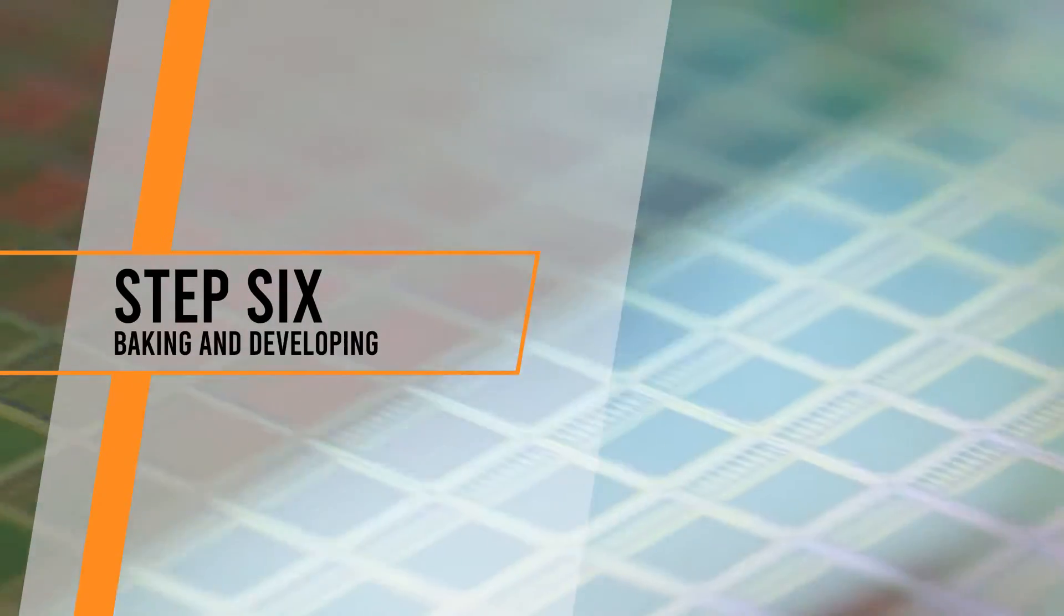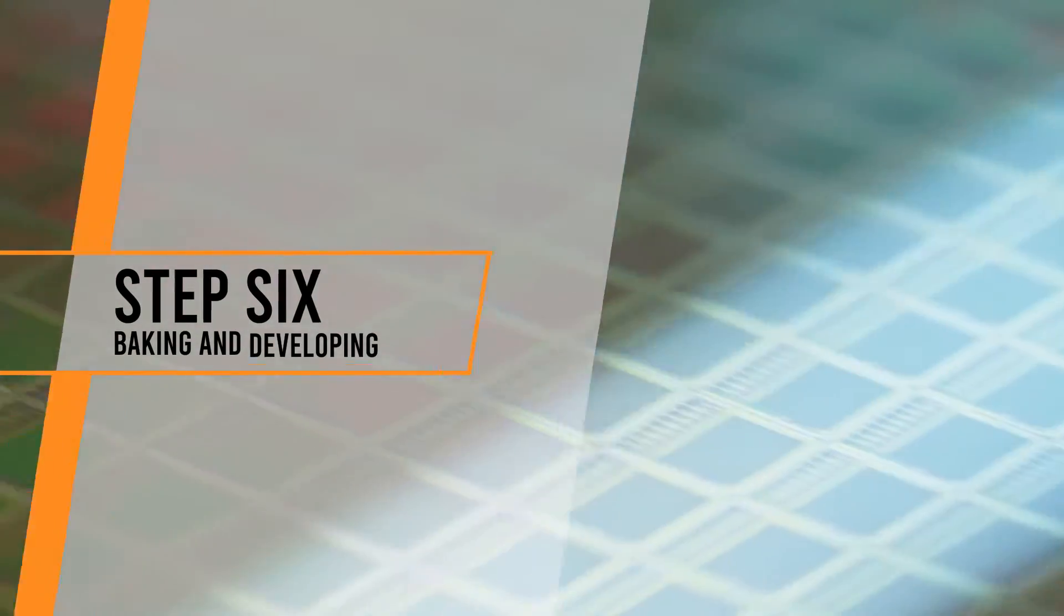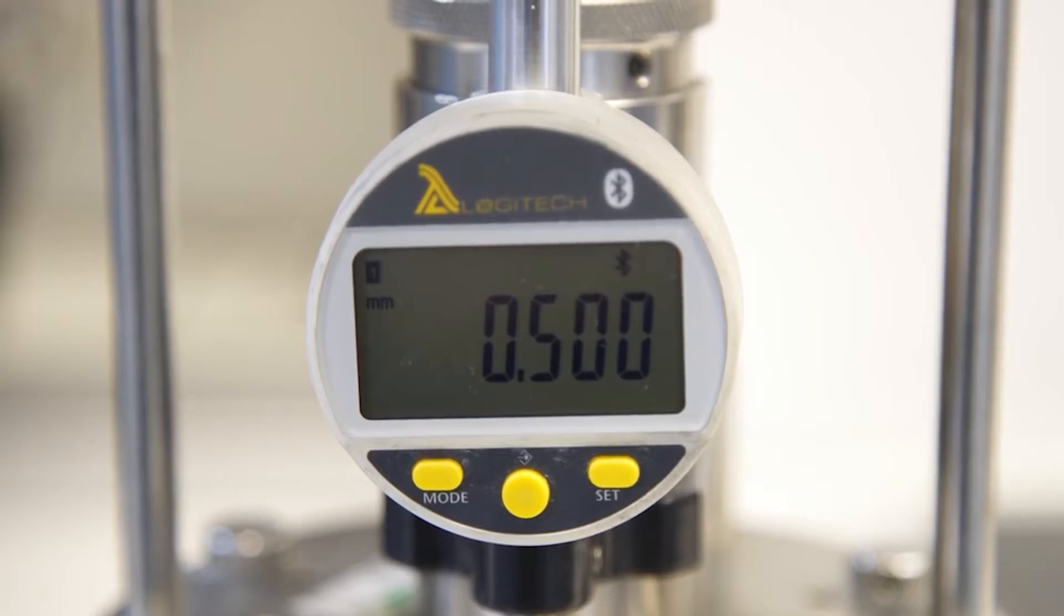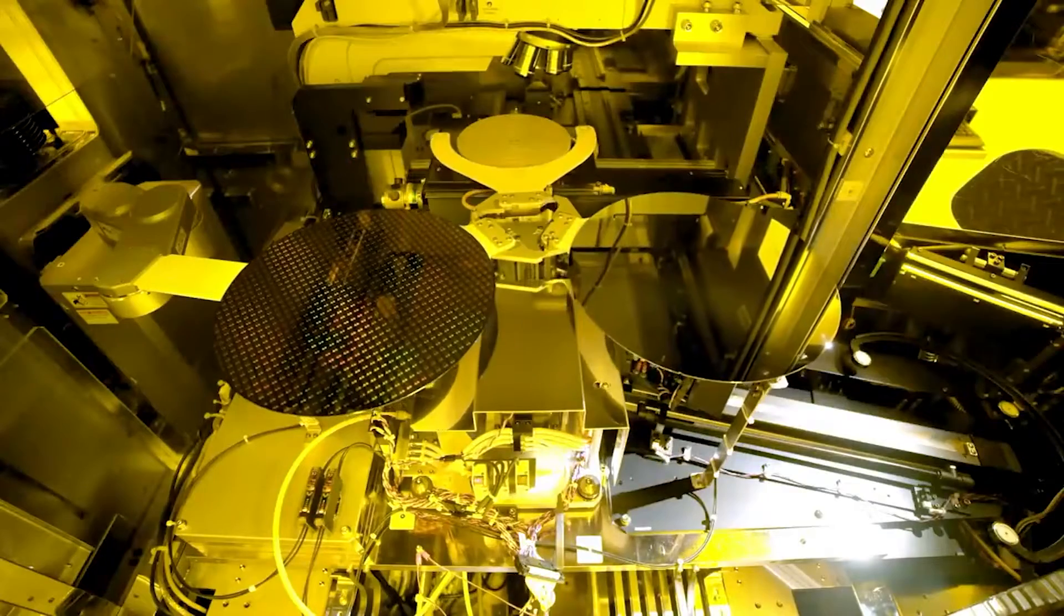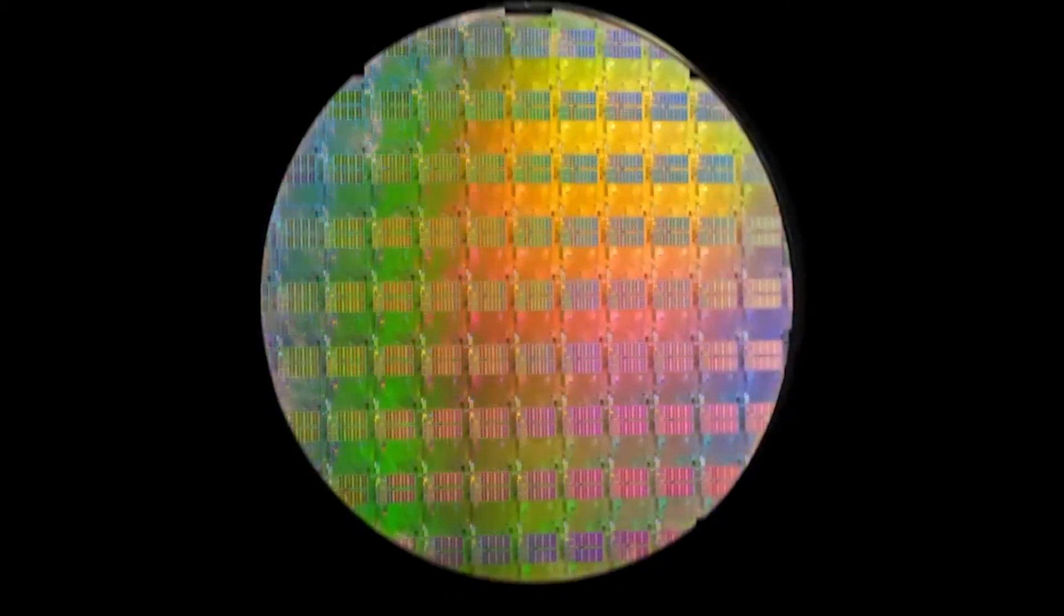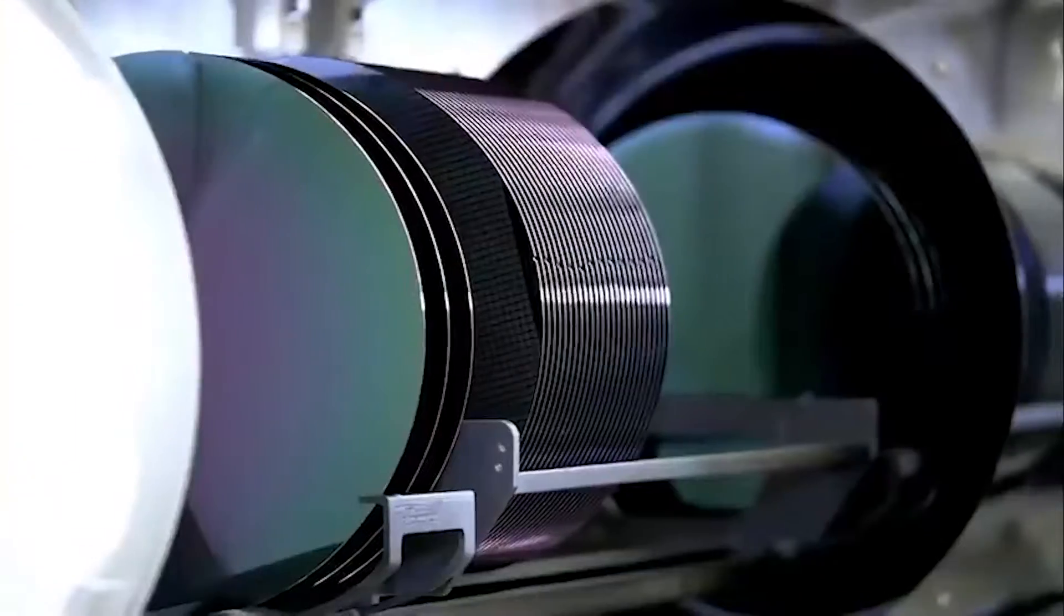Step 6. Baking and developing. After it is passed through the lithography machine, the wafer is then baked and developed to make those changes permanent. And in this process, some of the photoresist is washed off to create a pattern of open spaces in the resist.